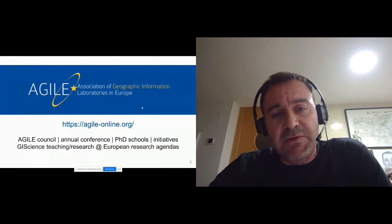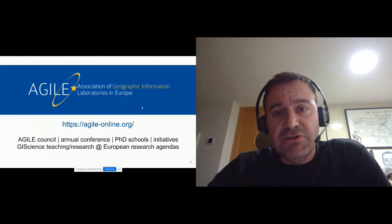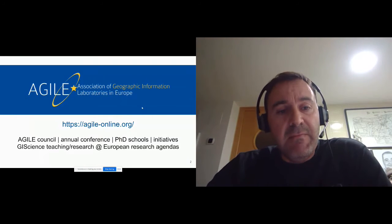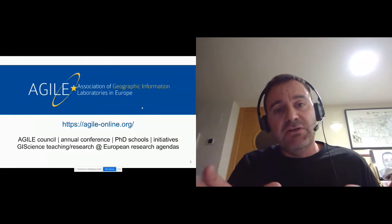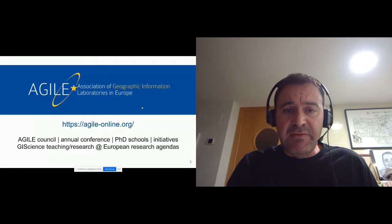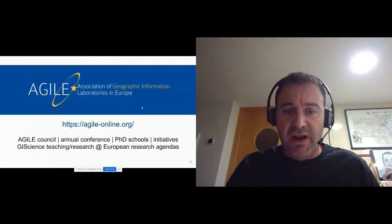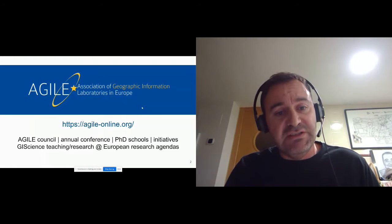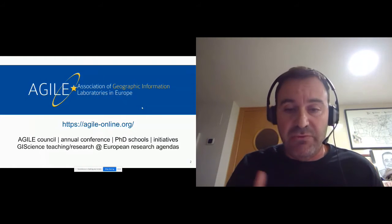To start with, I want to show you a bit of context. AGILE is an association of geographic information laboratories in Europe. Perhaps you in the USA don't know about that, but basically this is an association of research groups, not individuals. The main activities of the AGILE Association are to organize the main conference every year about GI science and to organize PhD schools and other initiatives related to GI science, teaching and research.